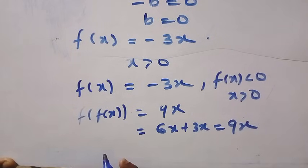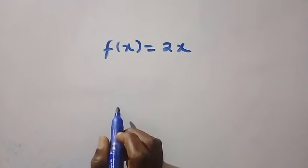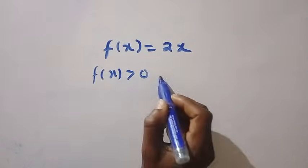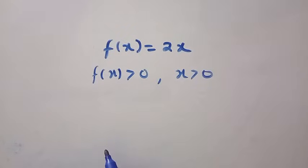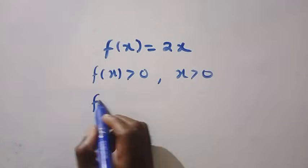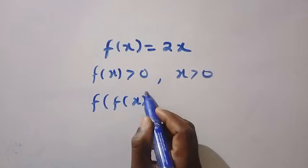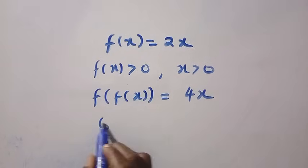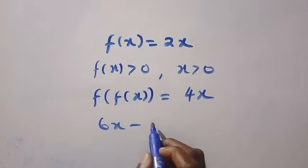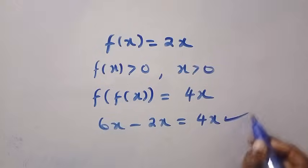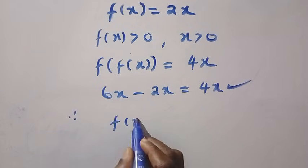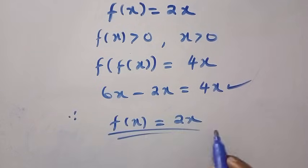We are going to go for when f of x equals 2x. With this one, f of x equals 2x, which shows that if f of x is greater than 0, definitely x is also greater than 0. If we try to put a check as well, having f of f of x, this will give us 4x. And the other side, we have 6x minus f of x, where f of x is 2x. This also equals 4x. This works. Therefore, the answer for this is f of x equals 2x, if x is greater than 0.